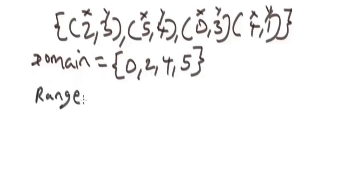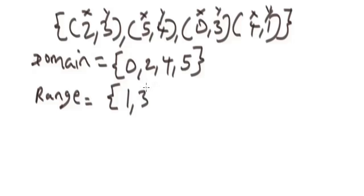The range will be the y-values, arranged in ascending order as well. The y-values are 1, 3, 3, and 4. When a number appears more than once, don't repeat it — just write it once. So the range is {1, 3, 4}. This will be the range of these ordered pairs.